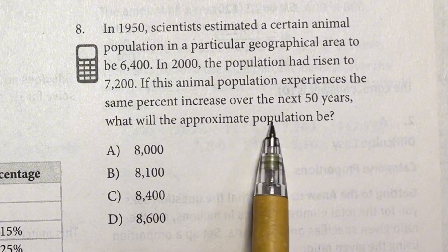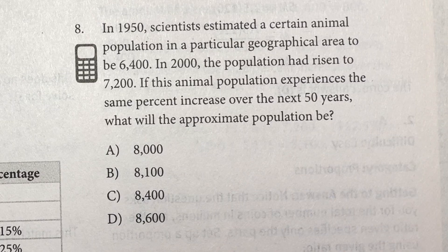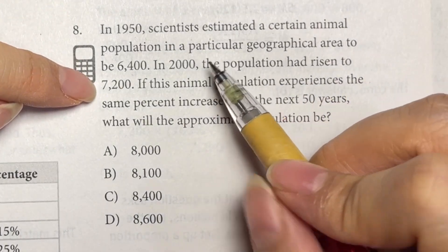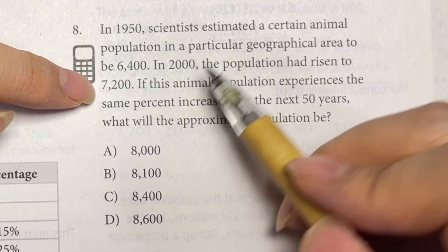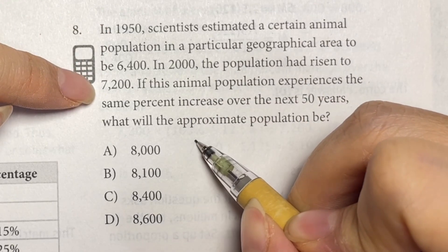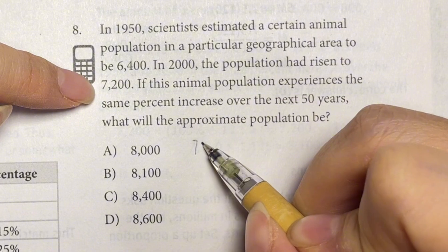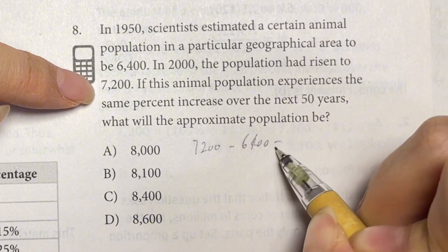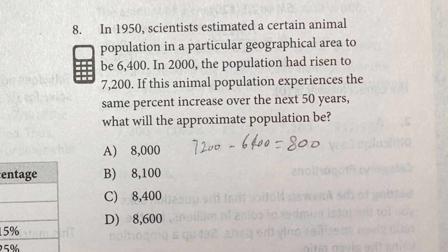what will the approximate population be? So how to solve this kind of problem? From 1950 to 2000, it increased how many? It's 7,200 minus 6,400, so it's 800, increased 800.